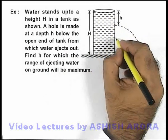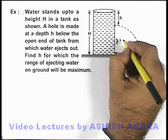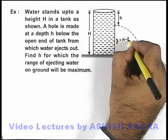Say if the hole is made at a height y above the ground level, then y can be given as capital H minus small h.